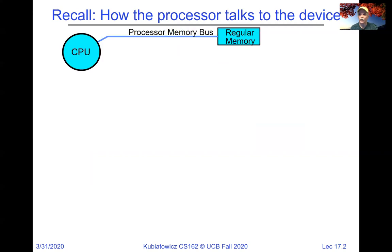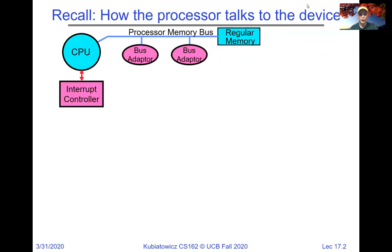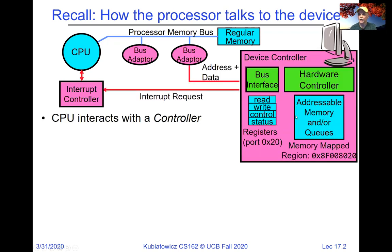We were talking about I/O devices. We put up this mental model of how a processor might talk to a device. There's always a memory bus, often directly off the chip, then a set of bus adapters and an interrupt controller. The device controller is the part that interfaces with the main system and the device, and the CPU interacts with the controller to control the device.